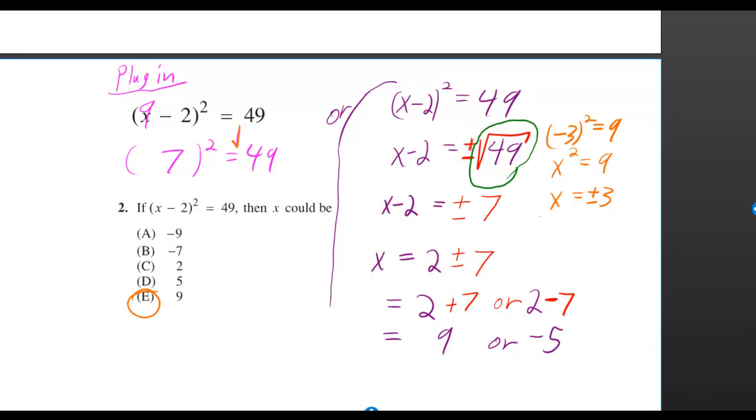But then, the square root of 49, that just is 7. So we have plus or minus 7 is equal to x minus 2. Then you add the 2 to both sides, and it shows up on the right side as 2 plus or minus 7.